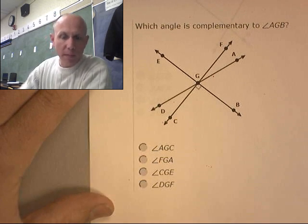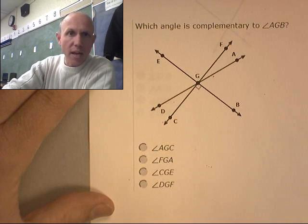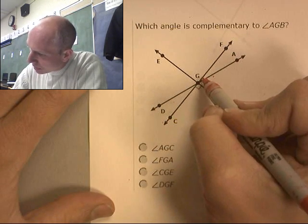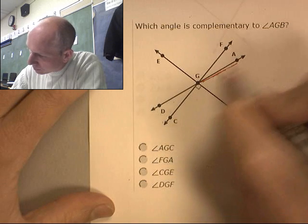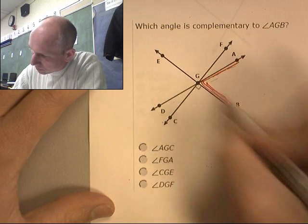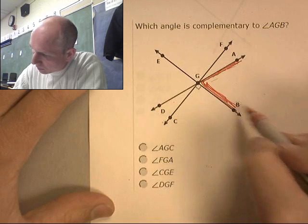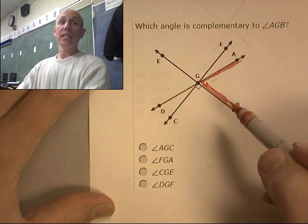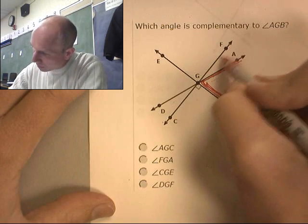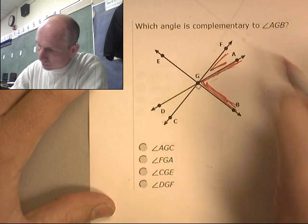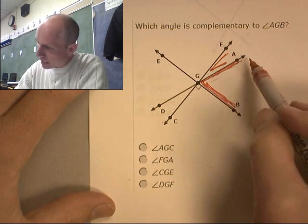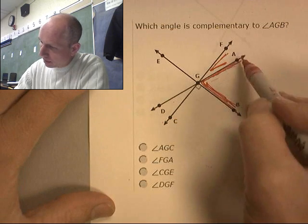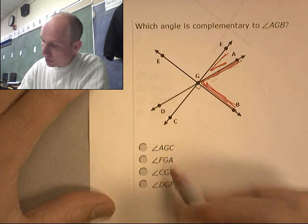So we found the one that is supplementary. Which angle is complementary to AGB? AGB, right here. Which angle is complementary? Complementary means sitting up straight, 90 degrees. Well, isn't it this guy right here? Isn't this his complement? Yeah, that's his complement. That's AGF. How about FGA? It's the same angle, right? FGA, there it is.